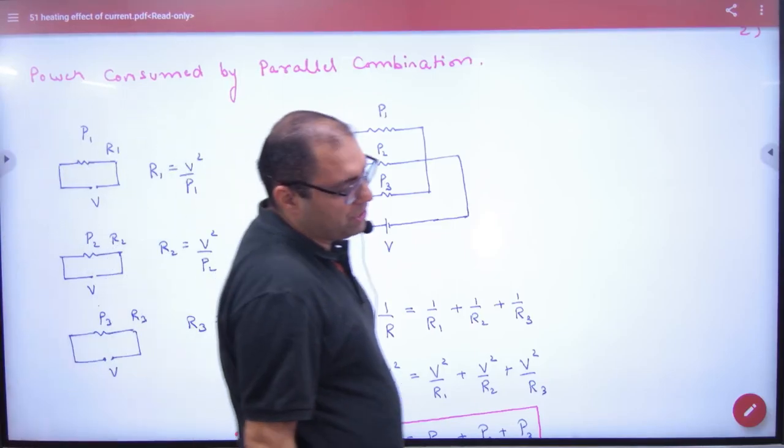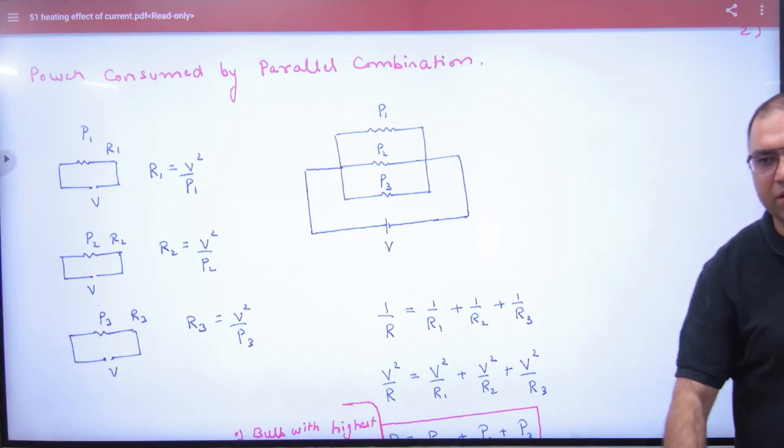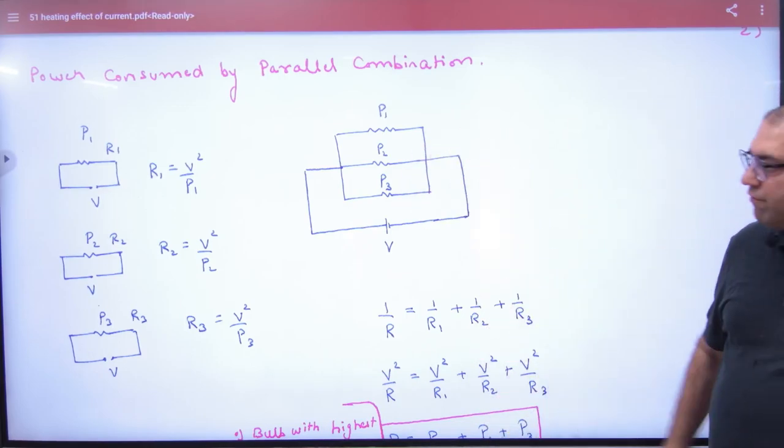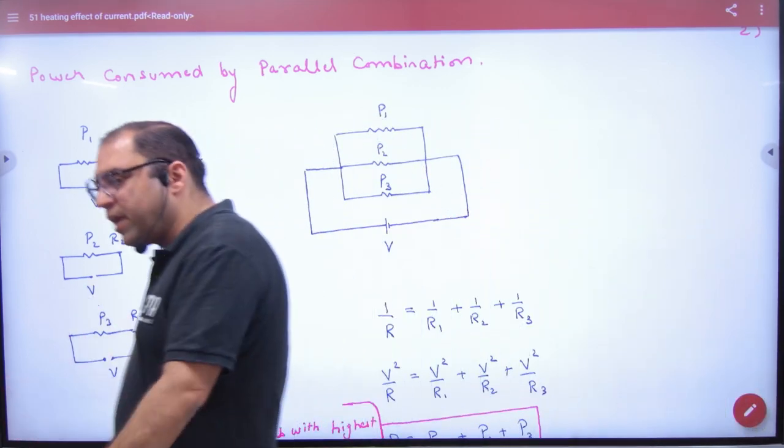Power consumed by Parallel Combination. What will happen in Parallel Combination? If these bulbs are placed in parallel with V, the first job is to keep it in the first